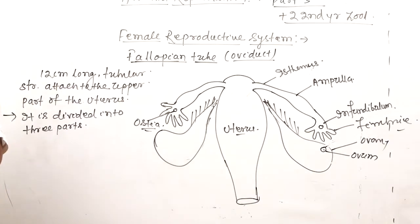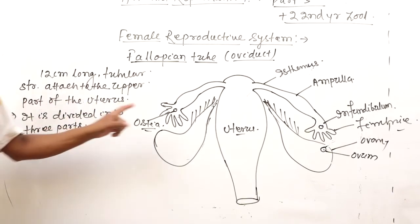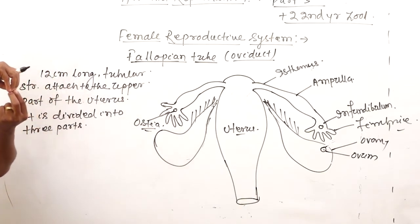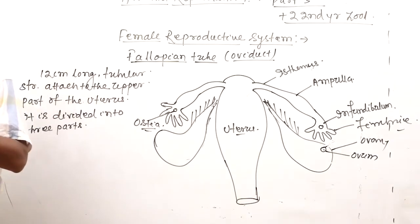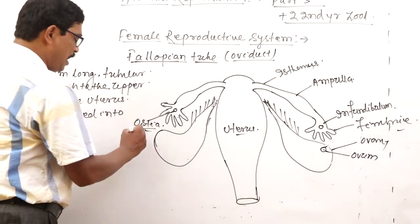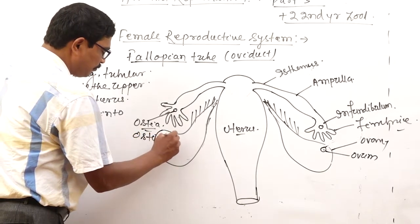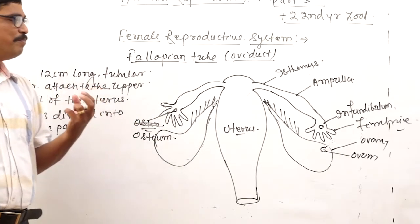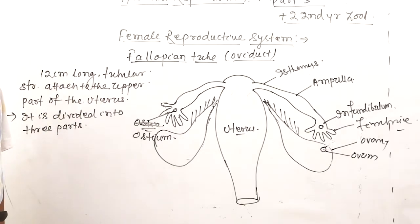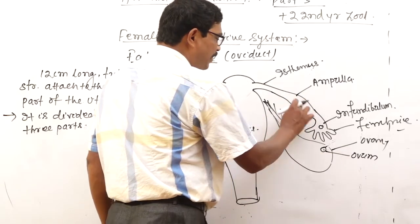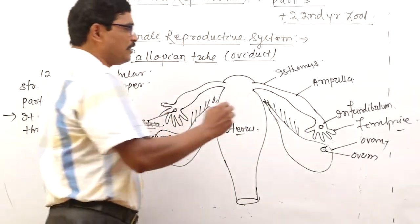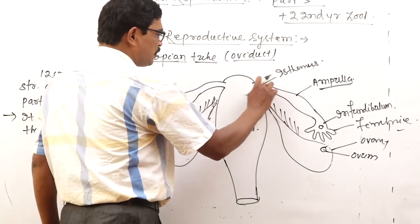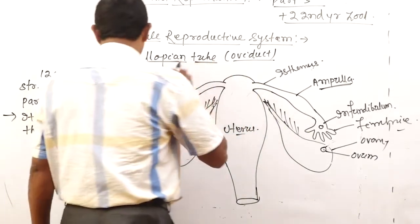At the proximal end there is a funnel-like structure called the infundibulum, with a central opening called the ostia or ostium. The next part is the wide swollen part called the ampulla. There is also a narrow part which attaches to the uterine wall called the isthmus.